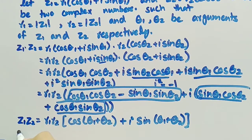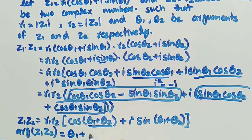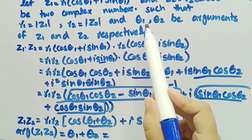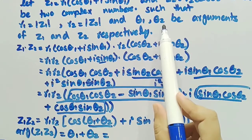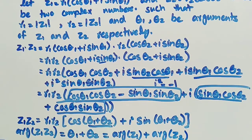This is the polar form of the product z1·z2. Therefore, the argument of z1·z2 equals θ1 + θ2, which is the angle in this expression. Since θ1 is the argument of z1 and θ2 is the argument of z2, we have proved that arg(z1·z2) = arg(z1) + arg(z2). Thus, the argument of the product of complex numbers equals the sum of the arguments of complex numbers.